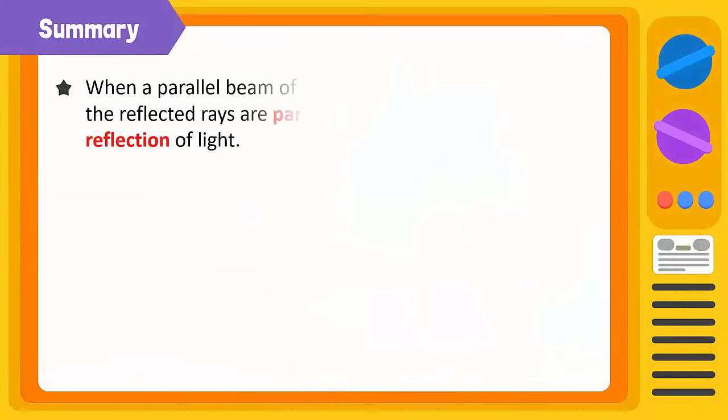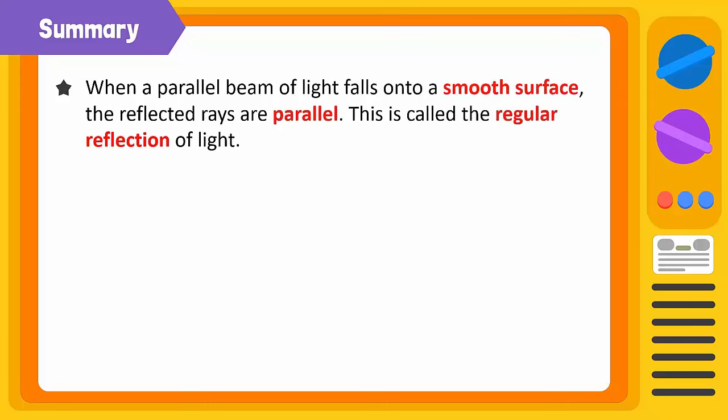Time to summarize. When a parallel beam of light falls onto a smooth surface, the reflected rays are parallel. This is called the regular reflection of light. We see our reflections in mirrors due to regular reflection.